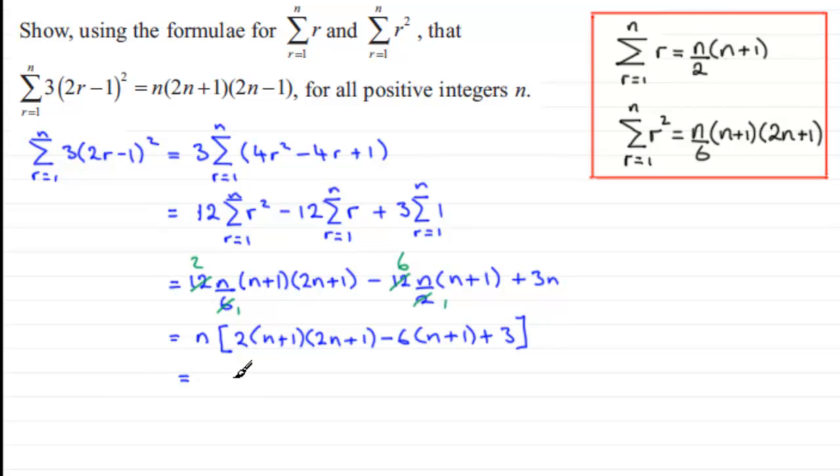So if we now start to expand this, we've got 2n squared times the 2 at the front so that's going to be 4n squared. Then you're going to have an n plus 2n so that's 3n times 2 is 6n. And then you've got plus 1 times the 2 is plus 2. And then expanding this we've got minus 6n minus 6 plus 3. And if we group up our terms inside the bracket here, we've got 4n squared and then the n terms cancel. And you've got 2 plus the 3 is 5 minus the 6 is minus 1.